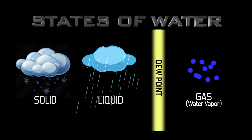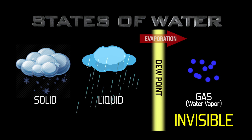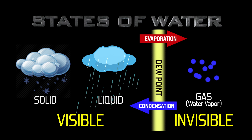The only way for water to disappear and become part of the air is to evaporate and become a gas. And the only way for water vapor to become visible again and come out of the air is to condense. If water vapor condenses, it can either appear as liquid water or solid water, which would be ice or snow. A good rule: if you can see water, it's a solid or liquid. If you can't see it, it has become a gas.